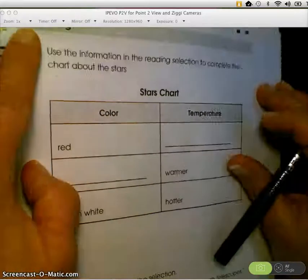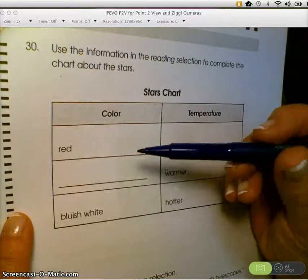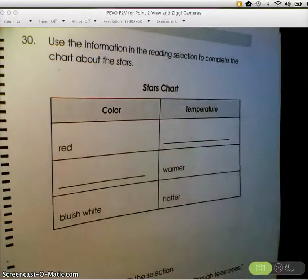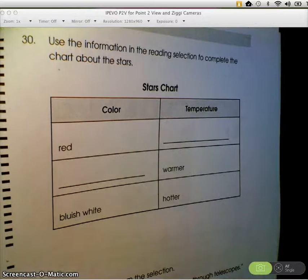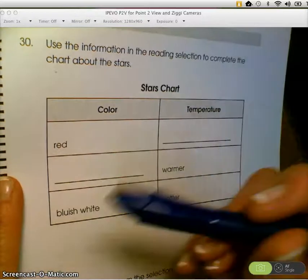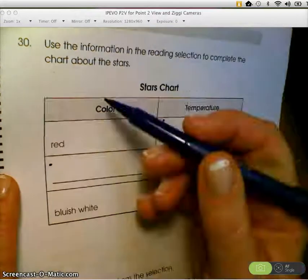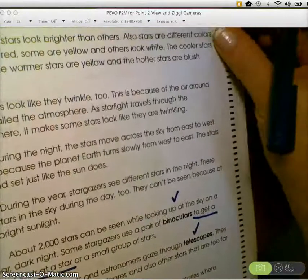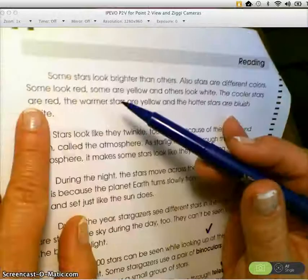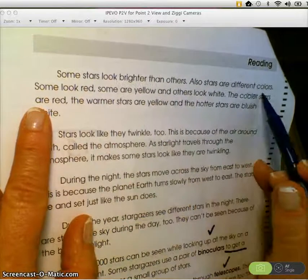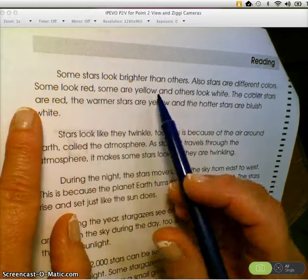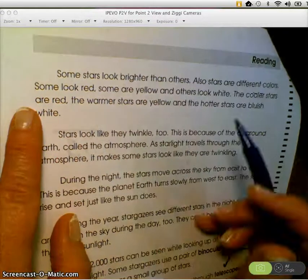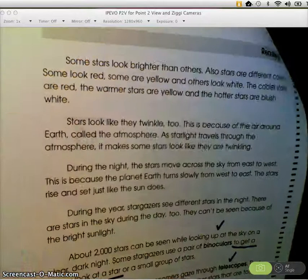Okay. Two pointer. And remember, guys, if you're a large writer, this is a real challenge for you, because anything that you write outside of the box on the real OAA test doesn't get counted, which is really very picky. So you're going to have to be careful about this. All right, we've got a star chart worth two points. One, two. And we're looking at the colors of stars. So before I do anything, I'm going to flip back and see where that is in the passage because I don't know. I'm skimming. Oh, here it is. At the top of the second page, some stars look brighter. Also, stars are different colors. Some look red, some are yellow, and others white. The cooler stars are red. Boom. Go back.